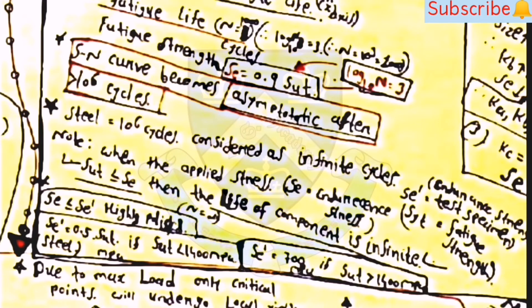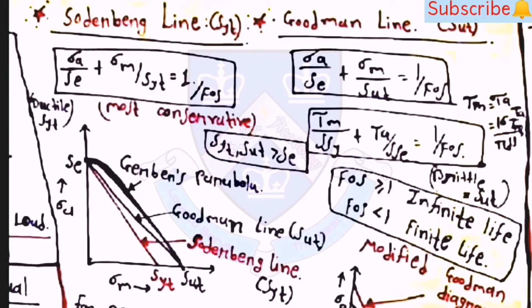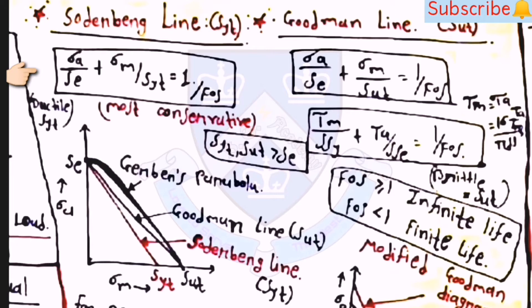Soderberg, Goodman, and Gerber equations: Soderberg line equation is sigma_a/S_e + sigma_m/S_yt = 1/FOS. Goodman line equation is sigma_a/S_e + sigma_m/S_ut = 1/FOS. The most conservative theory is the Soderberg line. Since S_yt or S_ut is always greater than S_e, in the diagram the lower line is Soderberg, then Goodman, then Gerber's parabola above.